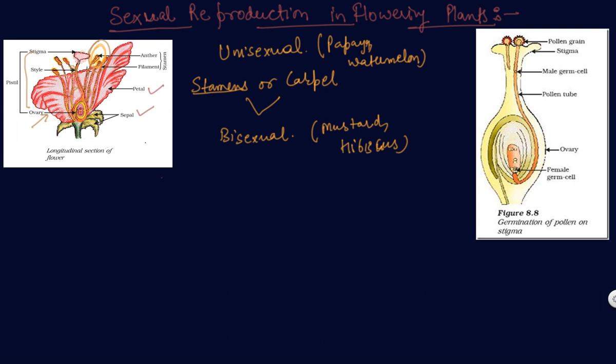These are basically the male and the female reproductive parts. It is also shown here: the female germ cell, ovary, the pollen tube, the male germ cell, and the stigma and pollen grains.